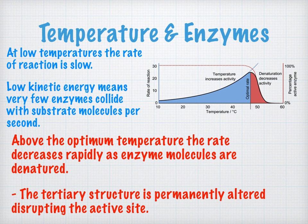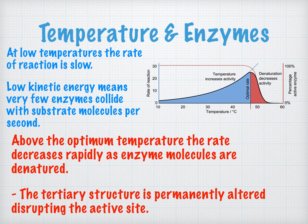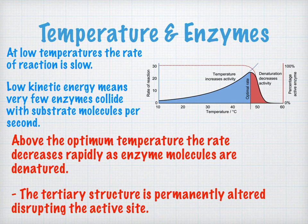As you go above the optimum temperature, the rate starts to decrease very rapidly. This is because the increased temperature causes enzyme molecules to be denatured. When this happens, the tertiary structure is permanently altered and it disrupts the active site so that the substrate is no longer complementary to it.